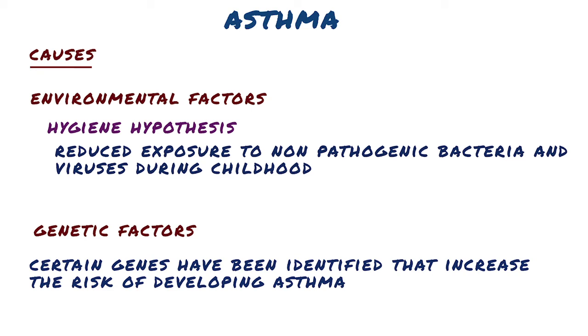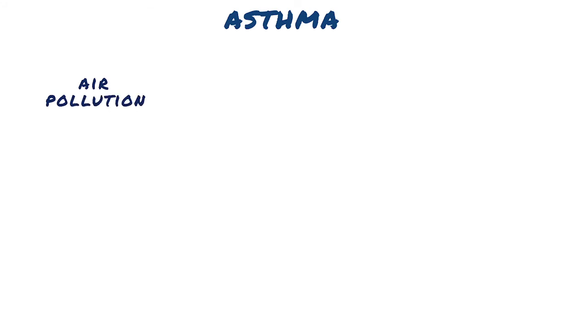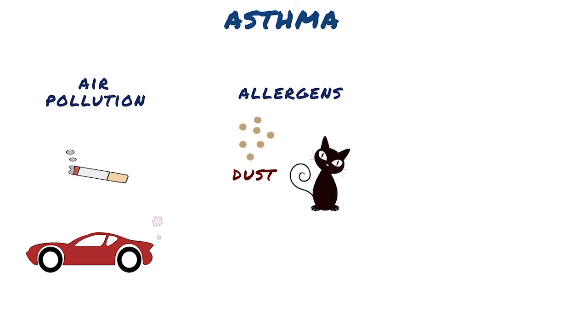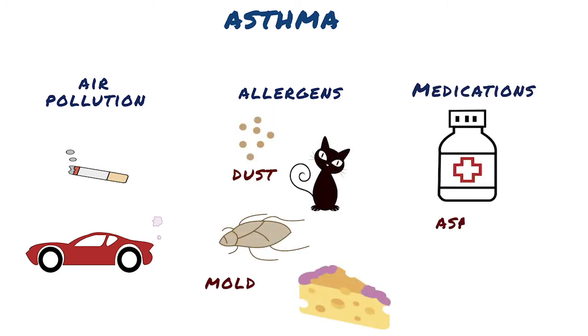Asthma that starts before the age of 12 is more likely due to genetic influence, while onset after age 12 is more likely due to environmental influence. The triggering substance that leads to an asthma attack can differ from person to person, but common ones include air pollution like cigarette smoke and car exhaust, allergens like dust, pet dander, cockroaches, and mould, as well as medications like aspirin and beta-blockers.